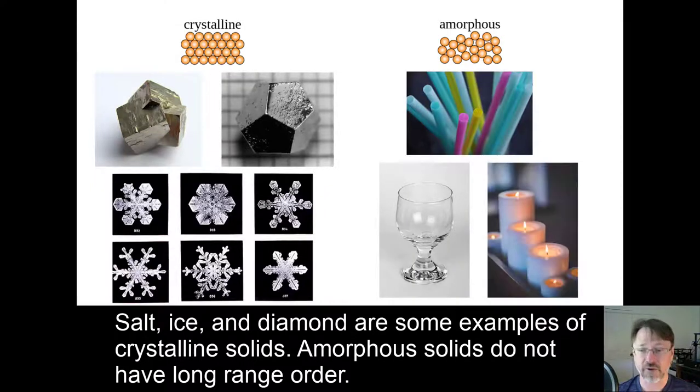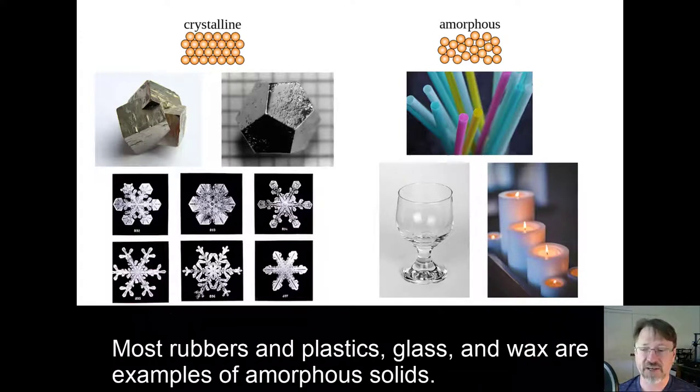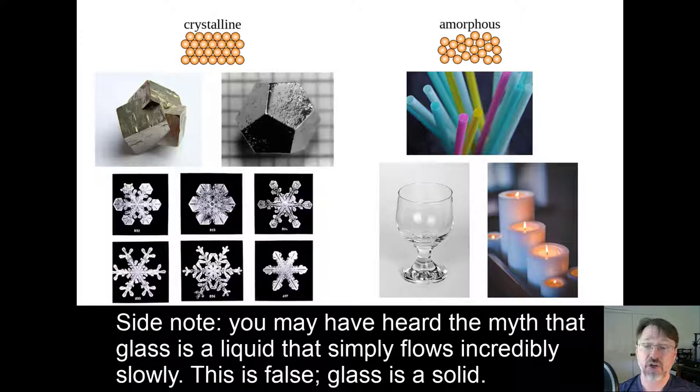Amorphous solids do not have long-range order. Most rubbers and plastics, glass, and wax are examples of amorphous solids. Side note: you may have heard the myth that glass is a liquid that simply flows incredibly slowly. This is false. Glass is a solid.